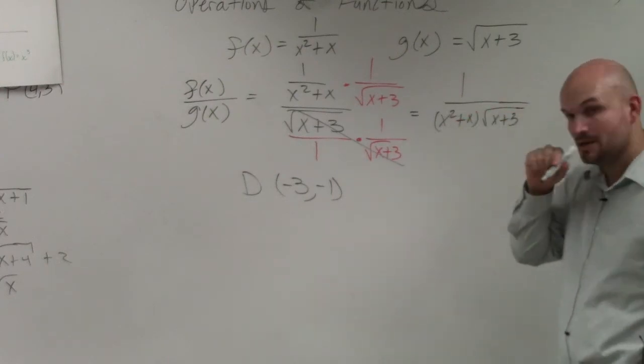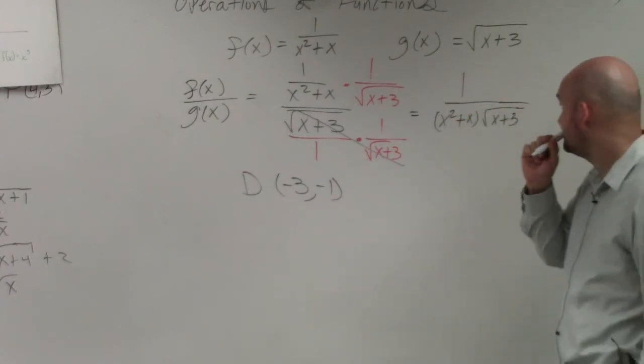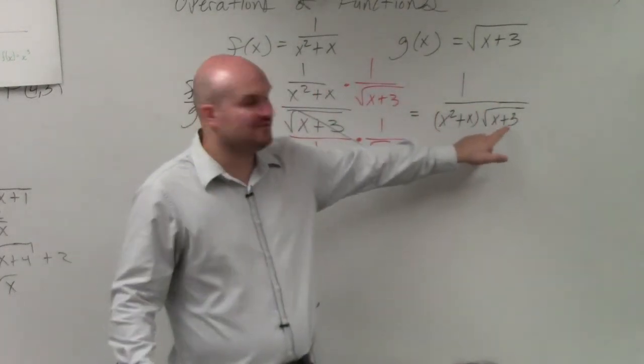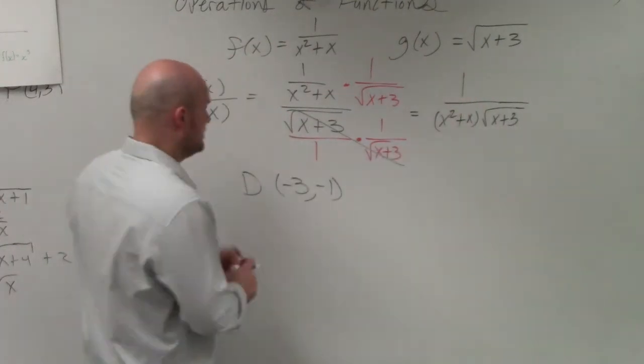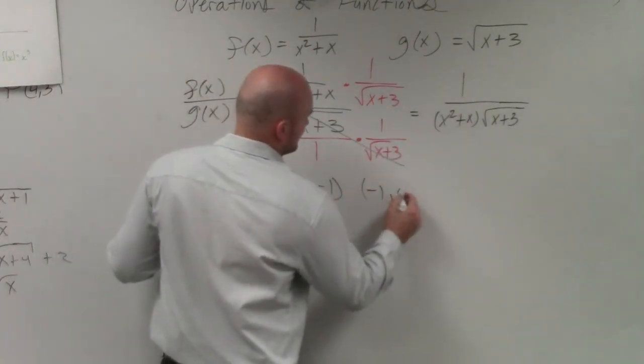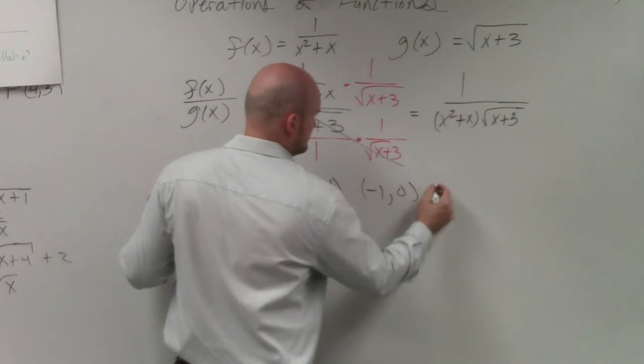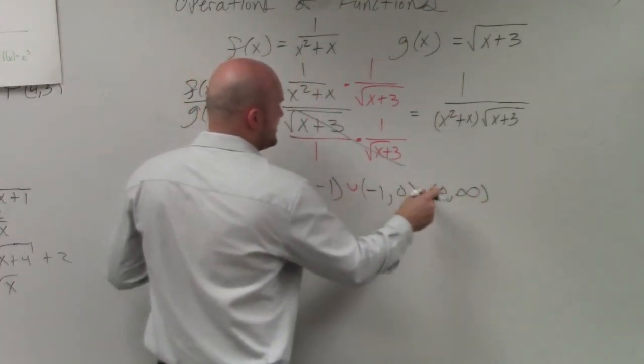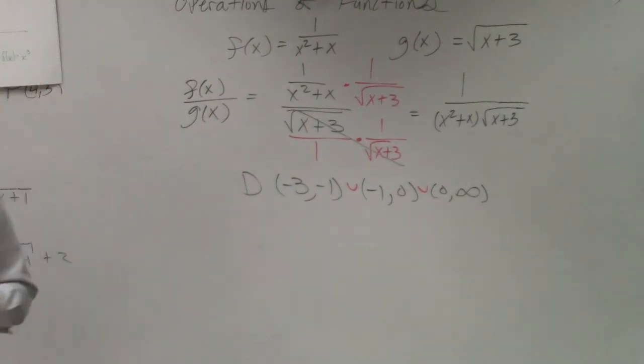Student: Can't it go below negative 3, like negative 3 to negative 1? Instructor: No, because let's try negative 4. Negative 4 plus 3 is negative 1, which breaks the rule. So the only difference with this problem's domain is that now negative 3 is not included.